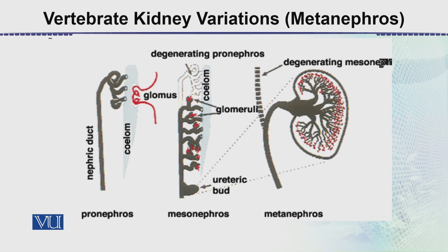In this case there is a bean-shaped structure, and here is the mesonephros — the mesonephric portion that is degenerating with the passage of time. So this is all about the vertebrate variations, in which we have three types: pronephros, mesonephros, and metanephros.